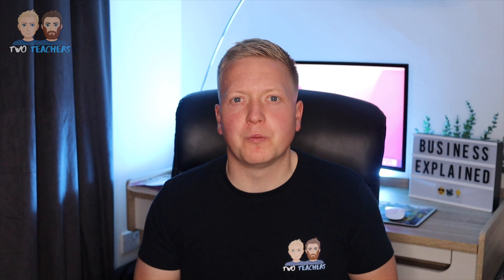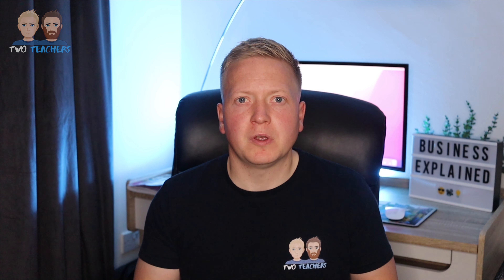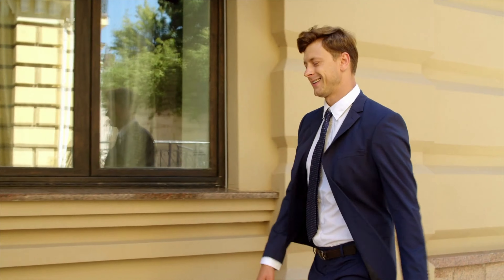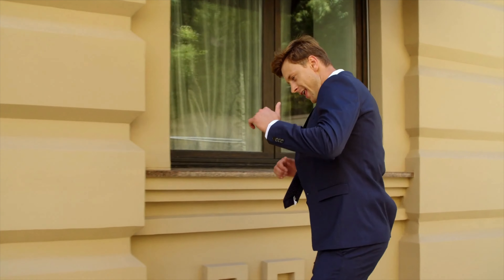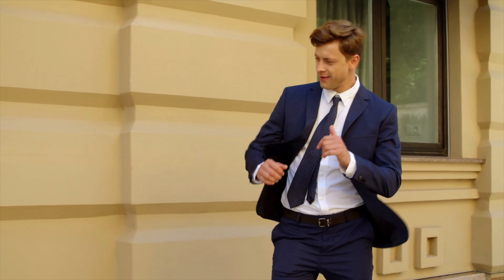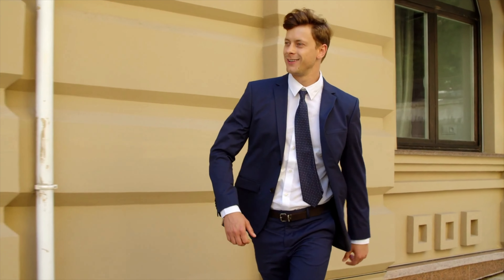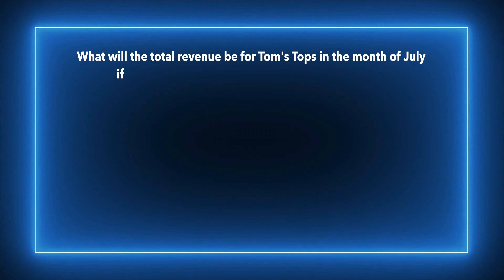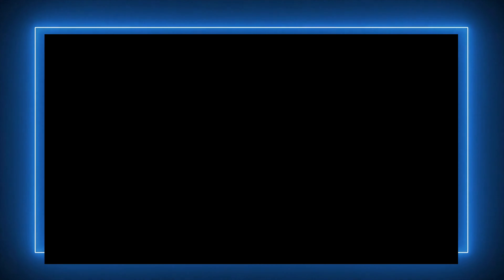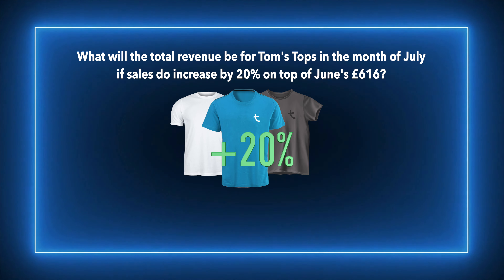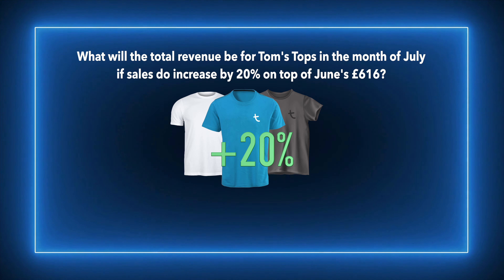Now here's one more challenge. Tom has expanded his product range and is predicting that his total sales revenue will go up by 20% in the month of July. What will the total revenue be for Tom's Tops in July if sales increase by 20% on top of June's £616? Pause your screen now and have a go, or wait and follow along.